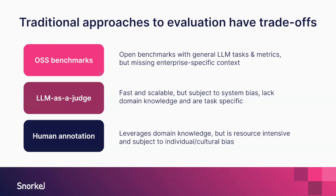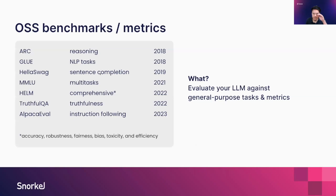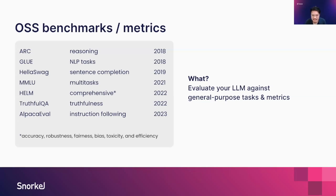So OSS benchmarks and metrics — the field is built on these types of open benchmarks. We're big fans of Helm over at Stanford. We helped contribute to this in 2022 and in an ongoing way with our co-founder Chris Ray. A lot of these benchmarks are really exciting ways to measure generic general-purpose LLMs, compare them to each other, and understand whether we're moving forward with each iteration of these large language models at scale.